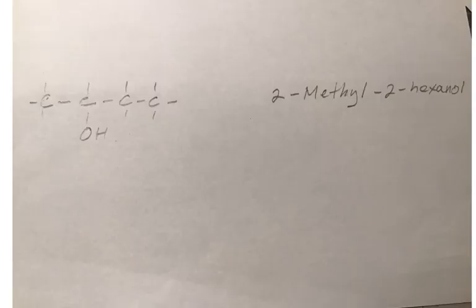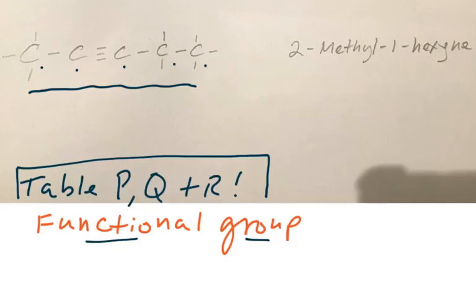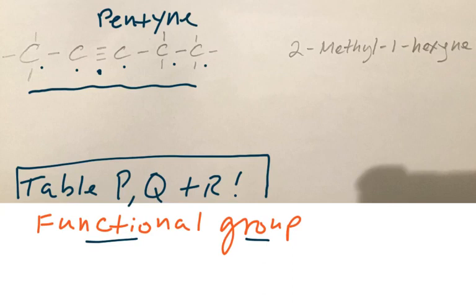We see that we have a triple bond there, so we know it's an alkyne, and it gets a Y-N-E ending. So we can say pent — pent means five carbons, and the Y-N-E, pentyne, means we have a triple bond somewhere.